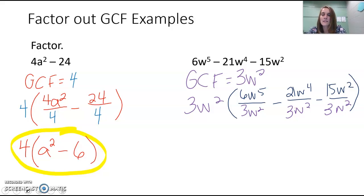So when we do that, we have the 3w squared, our GCF, on the outside. 6 divided by 3 is 2.